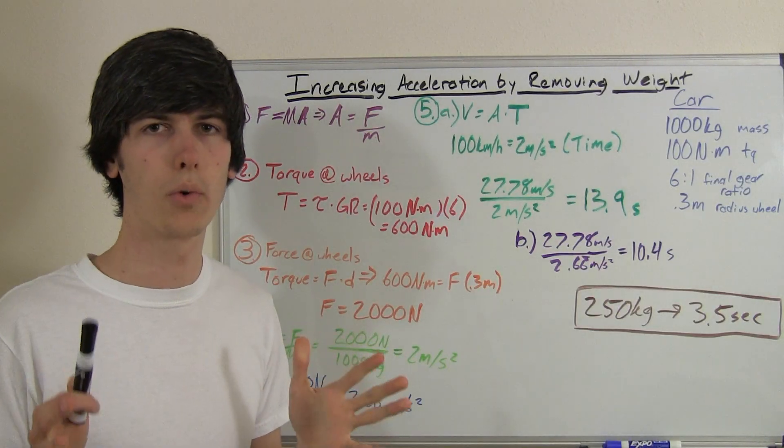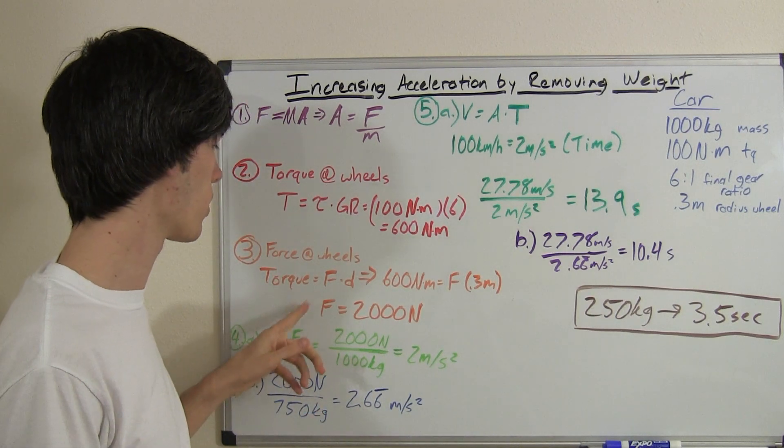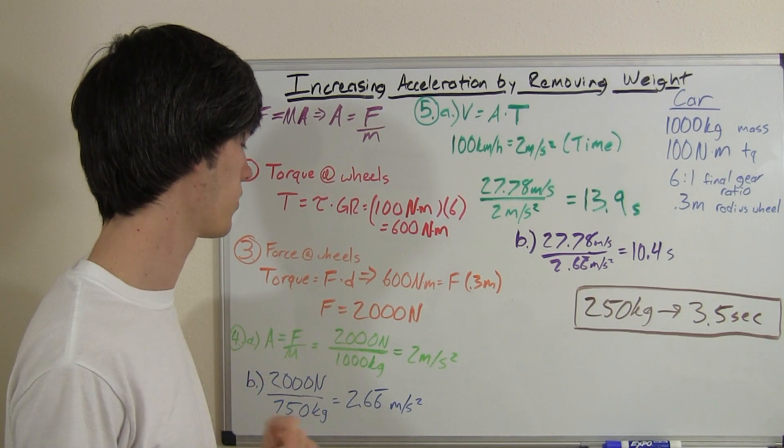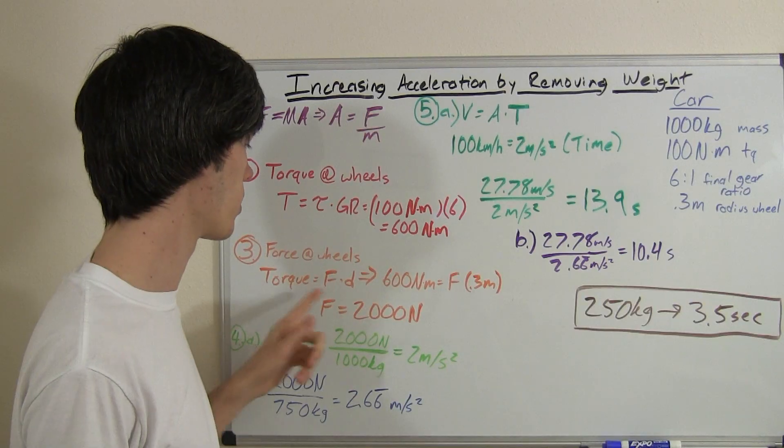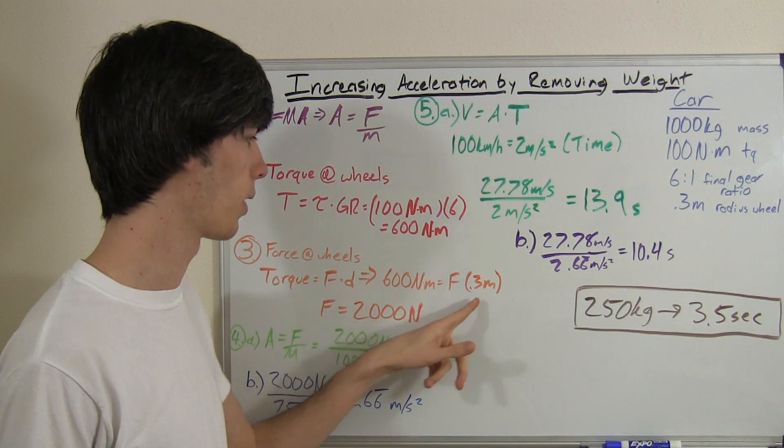So what's the force that the tires are putting down on the ground? Well, we know that torque is equal to force times distance. So we know the torque going to the rear wheels is 600 newton meters. We don't know the force, but we know the distance.